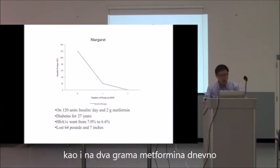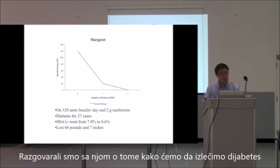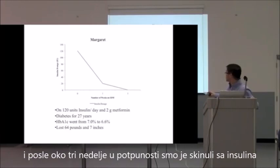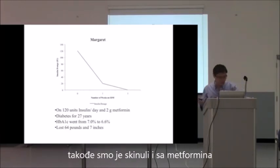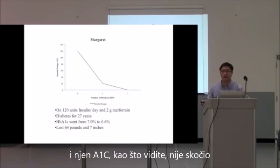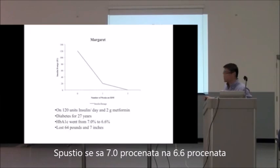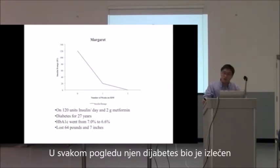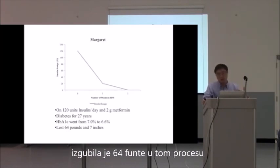She was also on two grams of metformin per day. We talked about how we were going to reverse the diabetes, she started on the program, and about three weeks later we had taken her off of all her insulin and her metformin. Her A1C didn't shoot up — it went from 7% to 6.6%. Her blood sugars were averaging between 5 and 6, off all medications. For all intents and purposes, her diabetes was reversed. She had lost 64 pounds in the process.